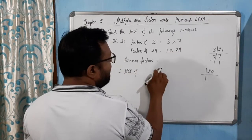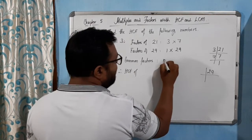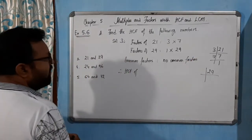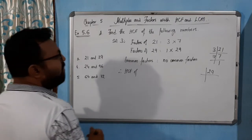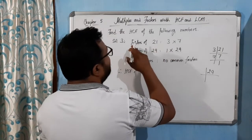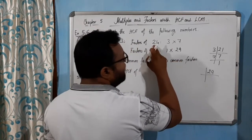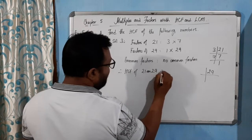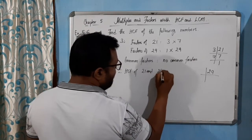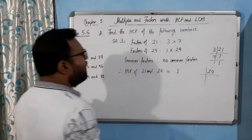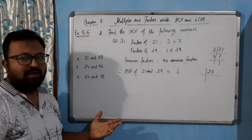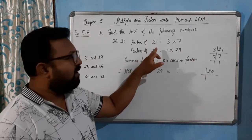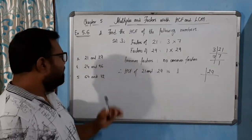Since 29 is prime, there are no common factors between 21 and 29 other than 1. So we write: no common factors other than 1. The highest common factor is 1, meaning 21 and 29 are divisible by 1 only. Therefore the HCF of 21 and 29 is 1.